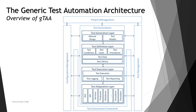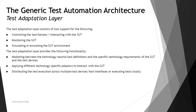Continuing, we have the test adaptation layer. Similar to other layers like the generation layer, definition layer, and execution layer covered in previous tutorials, the test adaptation layer consists of tool support for the following: controlling the test harness, interacting with the SUT, monitoring the SUT, and simulating or emulating the SUT environment.